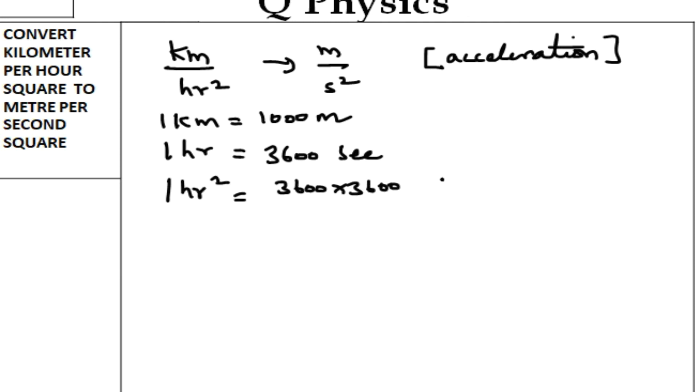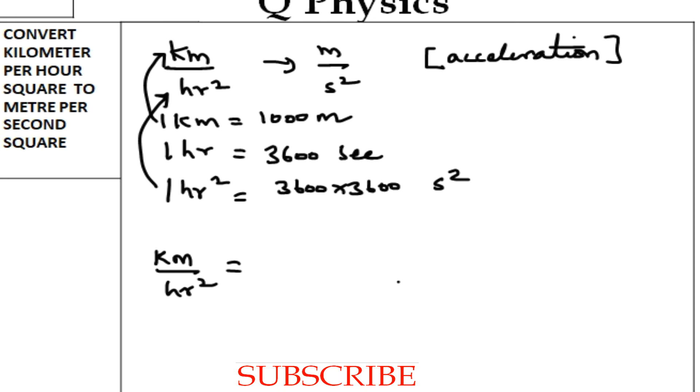If you substitute, one kilometer is 1000 meters divided by 3600 into 3600 second square. If I cancel three zeros, two zeros, and one more zero here...